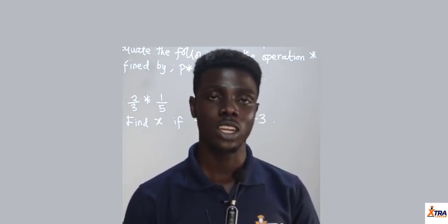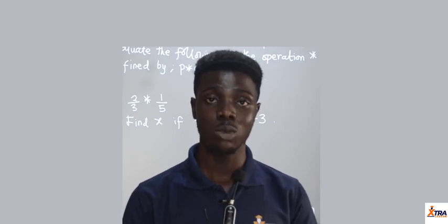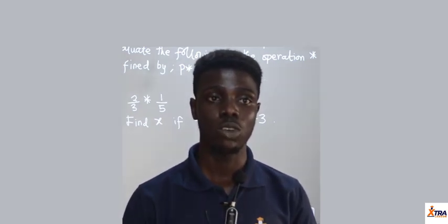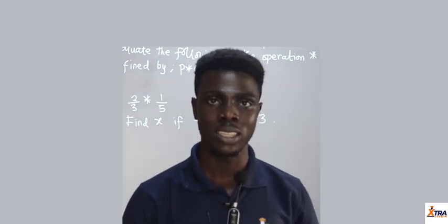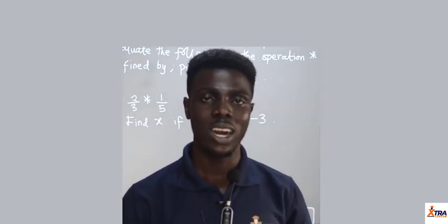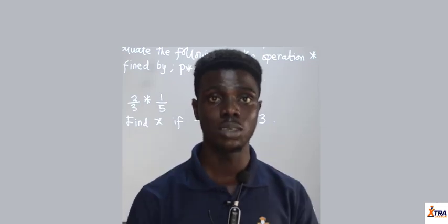We'll be considering the case where our example is based on a particular operation and then we are asked to find the particular variable. That is, we are given the operation and an unknown value. How do we get our unknown value using the same operation?